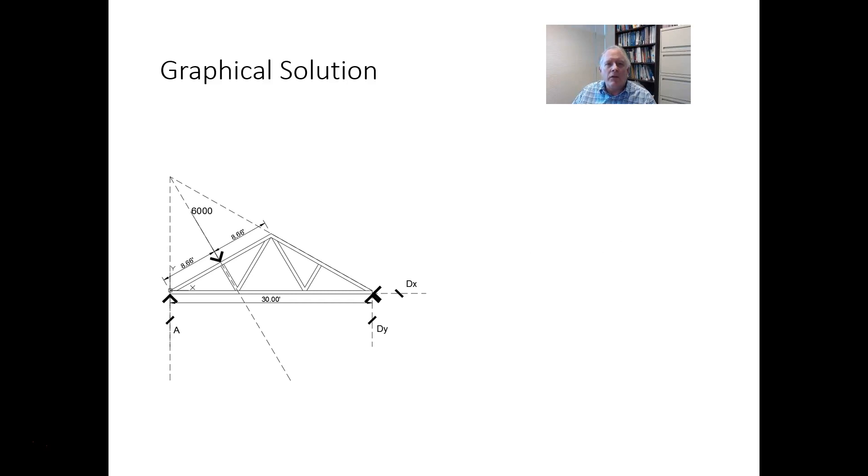A graphical solution involves recognizing the known lines of action and positions of the force. So here, we know the position and direction of the force, of the load at B. We also know the position and direction of the reaction at A. Find where those two intersect. And then connect the point D to the point of intersection. And then you copy those directions until they form a triangle.